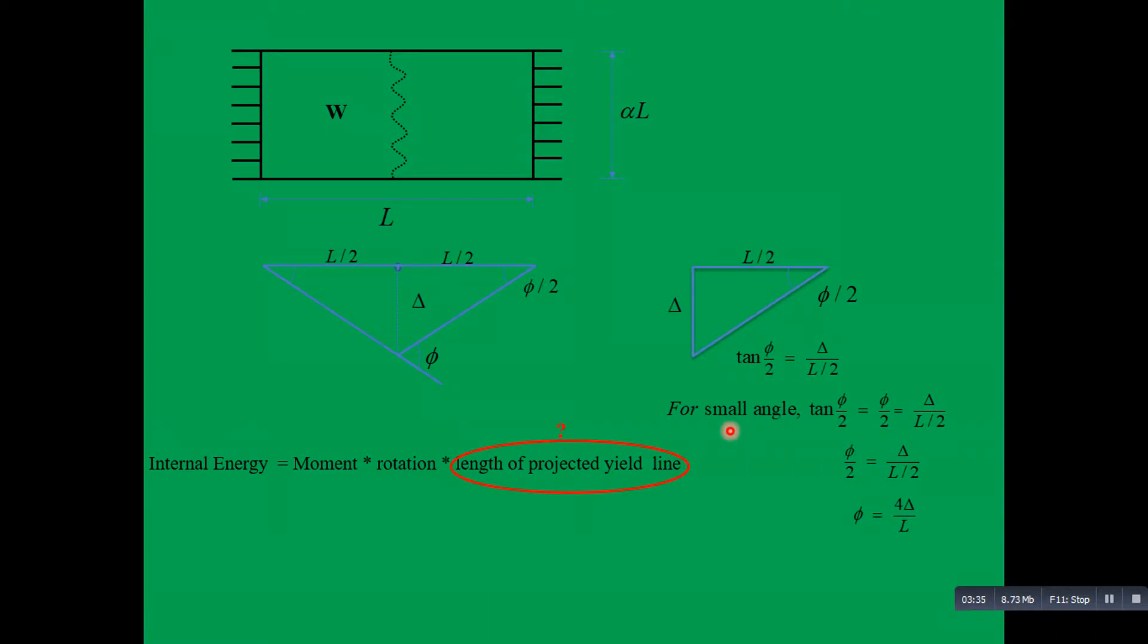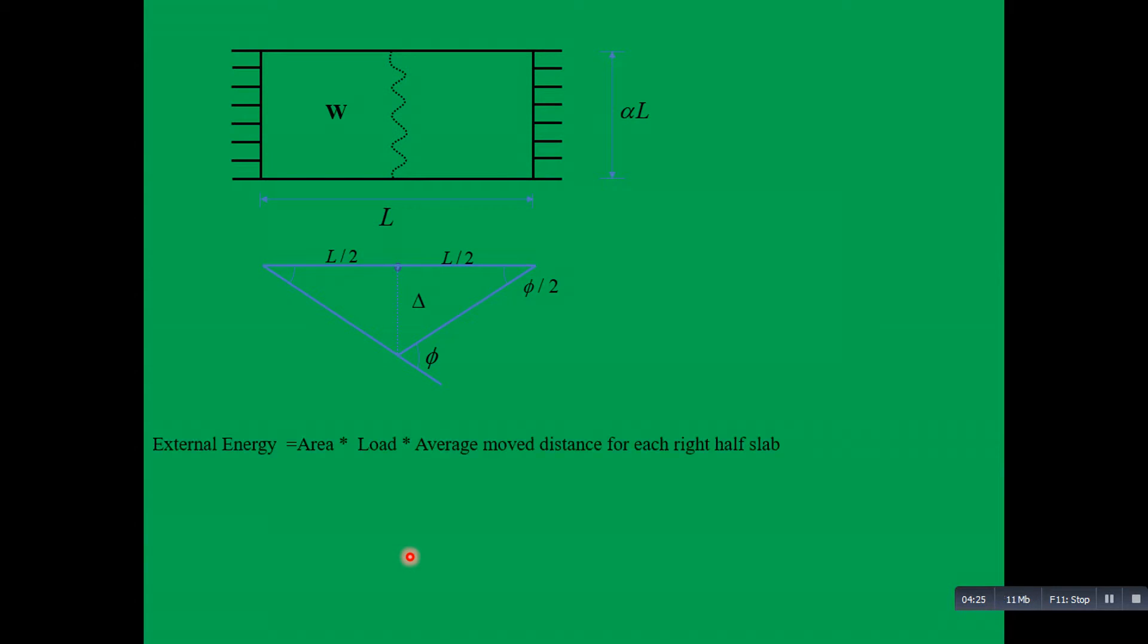The next task will be to determine the length of the projected yield line. This is the yield line and the projection of this yield line onto the axis of rotation, which is alpha L. So the length of the projected yield line is alpha L. Internal energy will be moment multiplied by 4 delta over L multiplied by alpha L. So internal energy will be 4 M alpha delta.